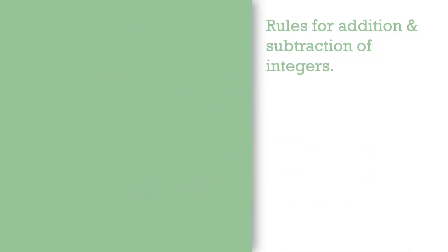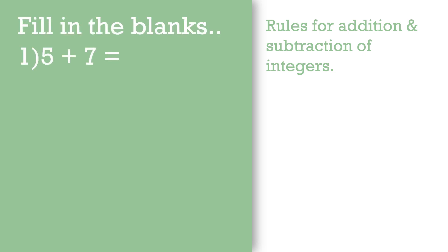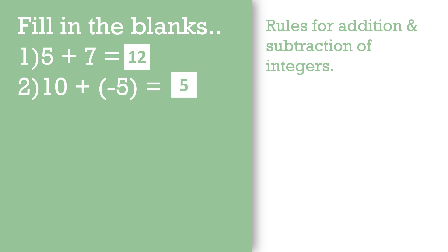Let's recall the rules for addition and subtraction of integers that we learned in our previous class. We'll have a recap — fill in the blanks. 5 + 7 = 12. Next, 10 + (-5): positive and negative becomes negative, so 10 - 5 = 5, positive 5, because the greater number is 10 and 10 is positive. Next, -4 + 3: negative and positive becomes negative, so 4 - 3 = 1, and we give a minus sign because 4 is the greater number and 4 has a minus sign.